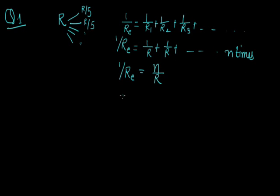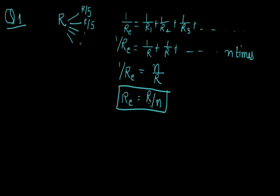So directly from this relation, R equivalent = R/N. If 2 equal resistances are connected in parallel, it will be R/2. If 3 resistances, then R/3. If 4, then R/4 and so on. But these resistances should be equal.